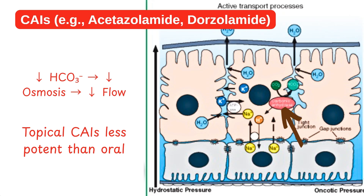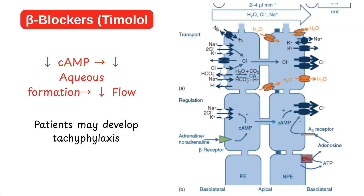Topical carbonic anhydrase inhibitors are less potent than the oral ones. The next class are the beta blockers like timolol. They suppress cyclic AMP activity, decreasing aqueous formation by reducing the activity of the sodium-potassium-chloride pump and sodium-potassium ATPase. However, 50% of patients will develop tachyphylaxis with prolonged use.